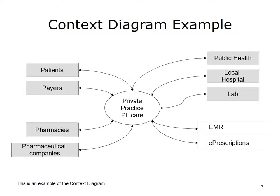A context diagram, shown on the slide, is the highest level, i.e., least detail, DFD. The context diagram depicts the system or process you are modeling as one process — here, private practice patient care. Entities that interact with that process are shown: patients, payers, pharmacies, etc., as are the data stores (the EMR and an e-prescription data store), and the data flow between the entities, processes, and data stores. Context diagrams are very helpful in making sure that our analysis is complete and that interactions with external entities are not forgotten.